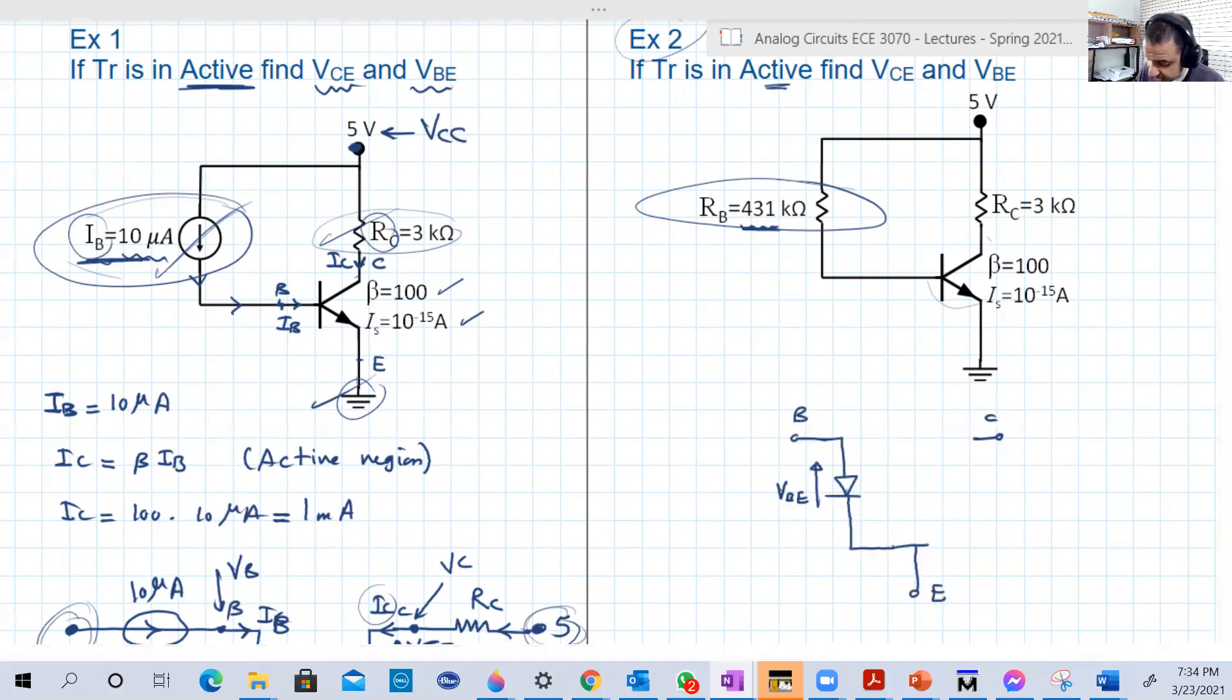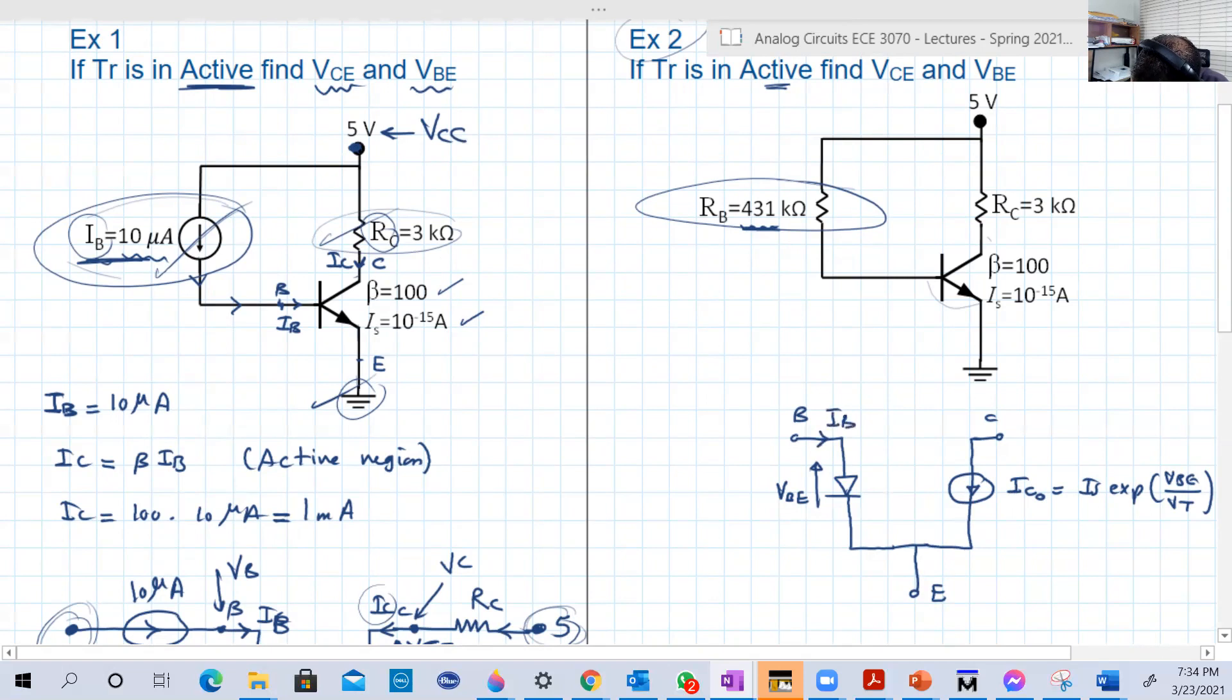In the active region, we have a forward-on junction between the base and the emitter. And here is VBE, one of our unknowns. Our unknowns is VBE and VCE, just like the same, exactly the same example, just replace the current source with a resistor. Then between the collector and the emitter, we have IC node, which is IS exponential VBE over VT. VT is 25 millivolt.